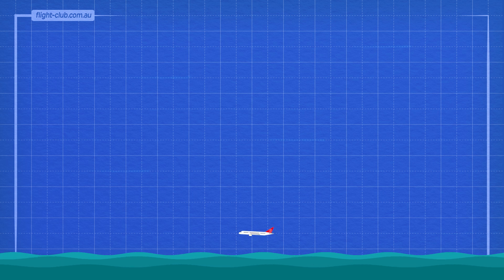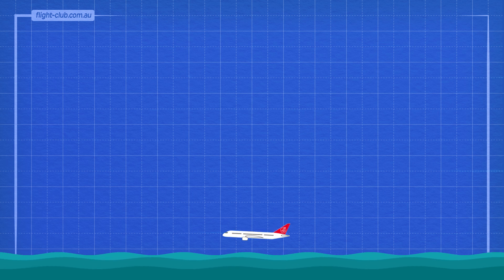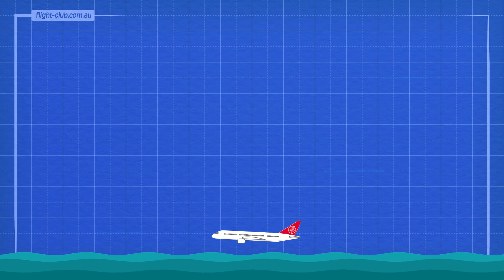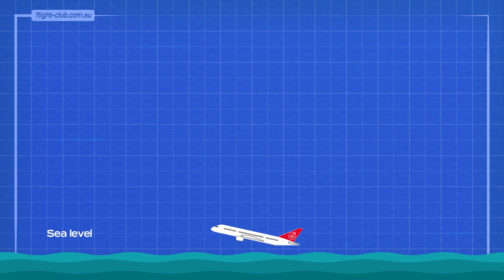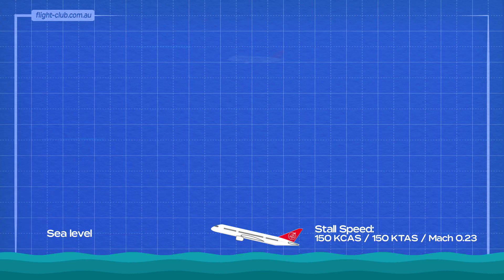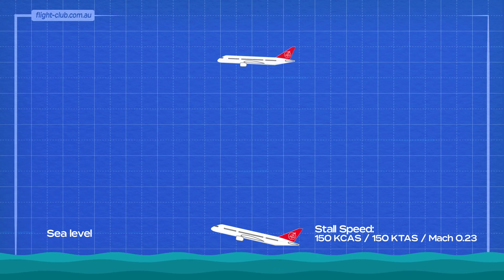The stall speed of a jet aeroplane varies with an increase in altitude. An increase in altitude results in a corresponding decrease in air density and outside air temperature. For example, at sea level a jet aeroplane stalls at 150 knots calibrated airspeed, which in standard atmosphere equals 150 knots true airspeed and a Mach number of 0.23.